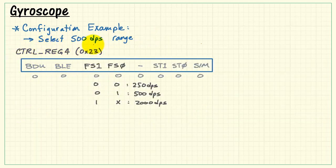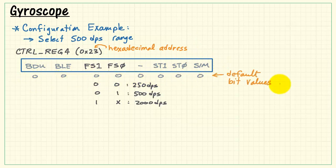We can select the range from the control reg number 4. This is at hexadecimal address 23. All the bits by default are 0. The bit field of interest for the full scale range is located right here. We want 500 DPS.